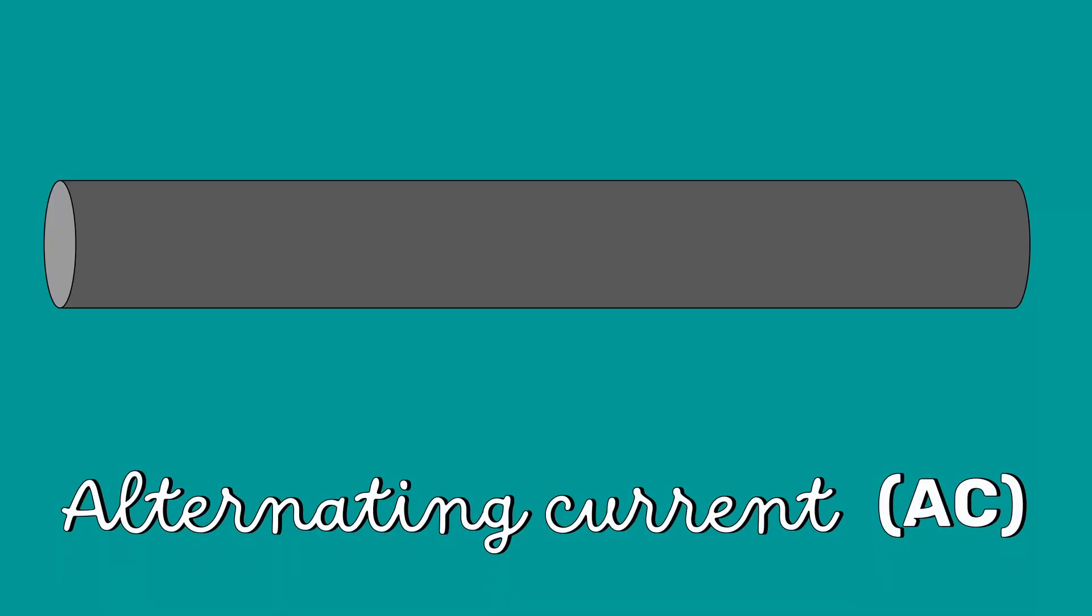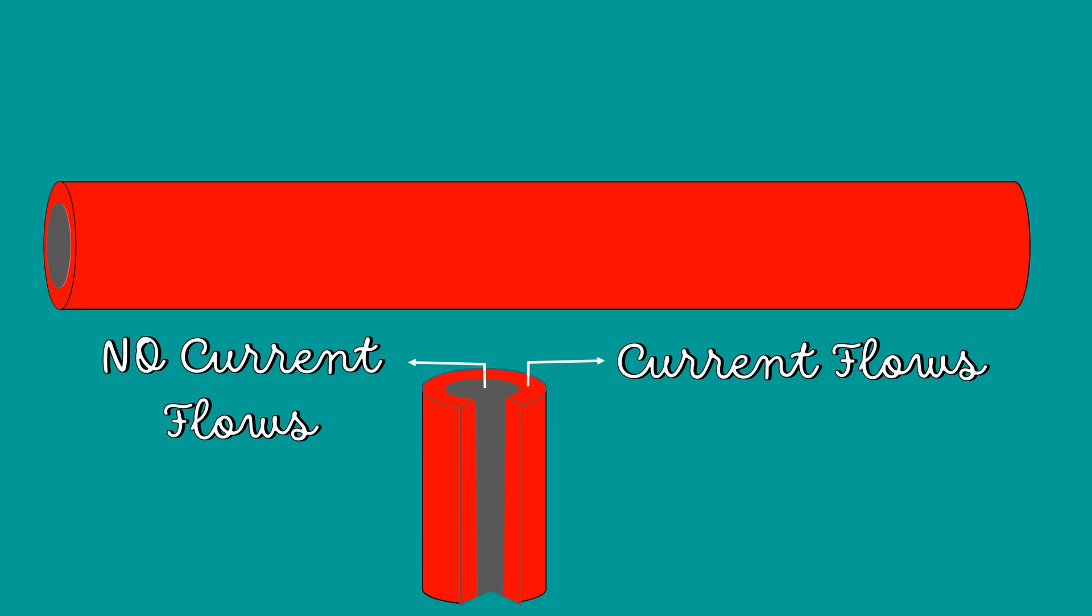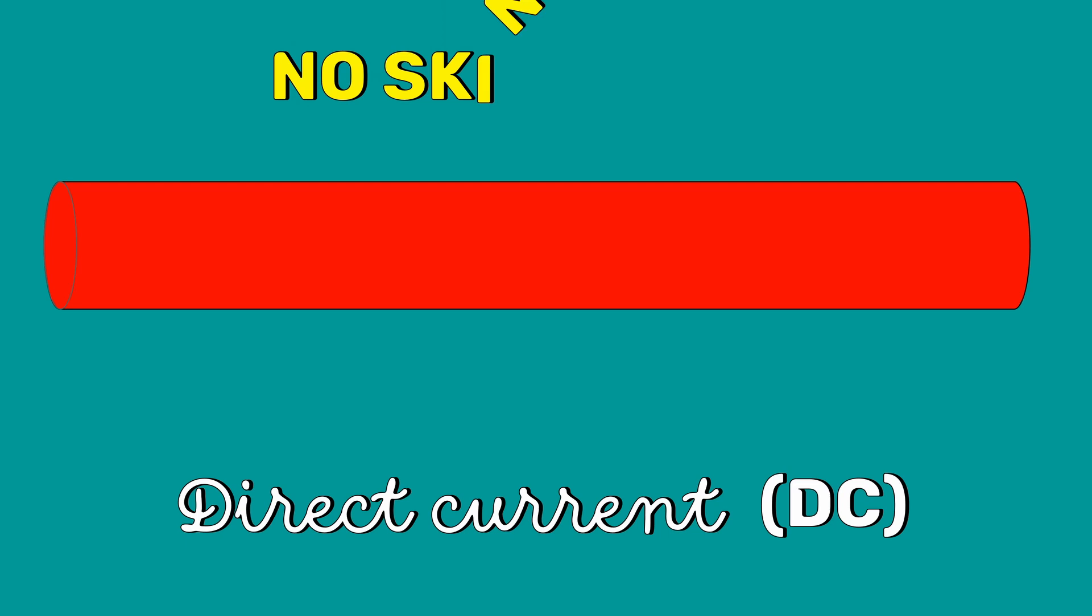When a conductor is carrying alternating current or AC, this current is not uniformly distributed over the whole cross-section of the conductor. The current tends to concentrate only near the surface of the conductor. This is called the skin effect. In DC, there is no skin effect.